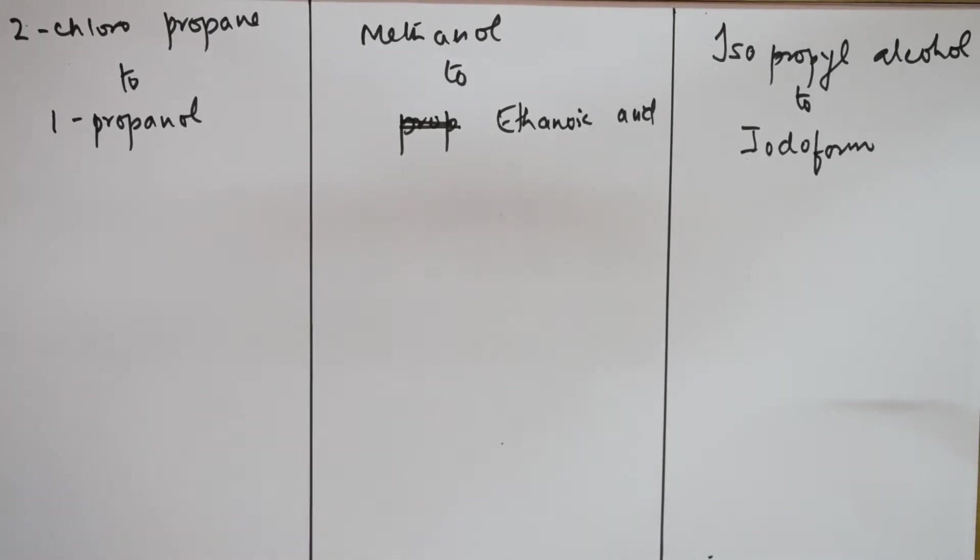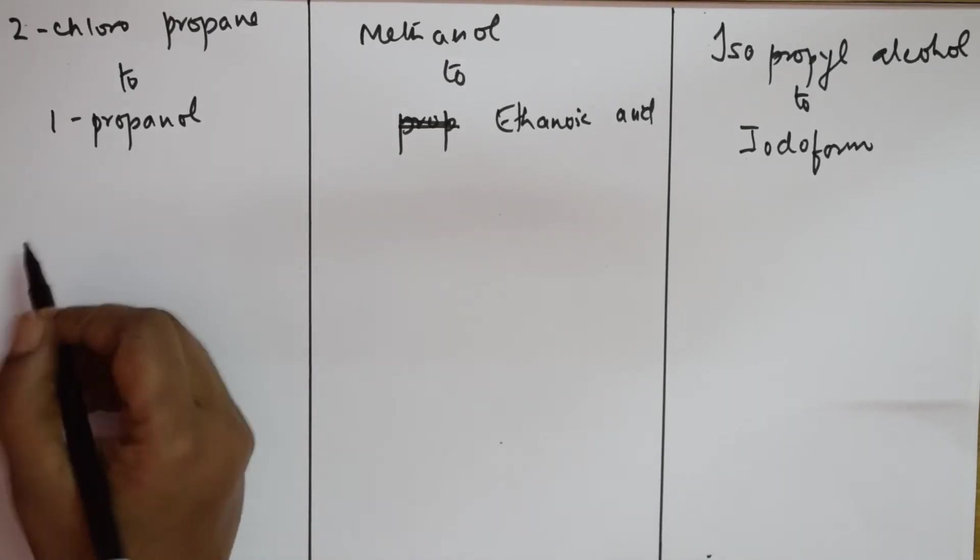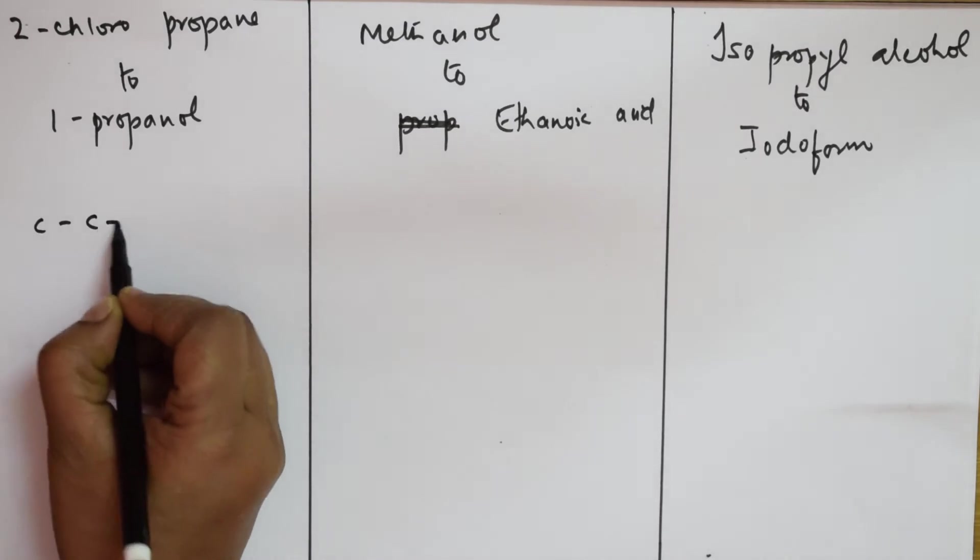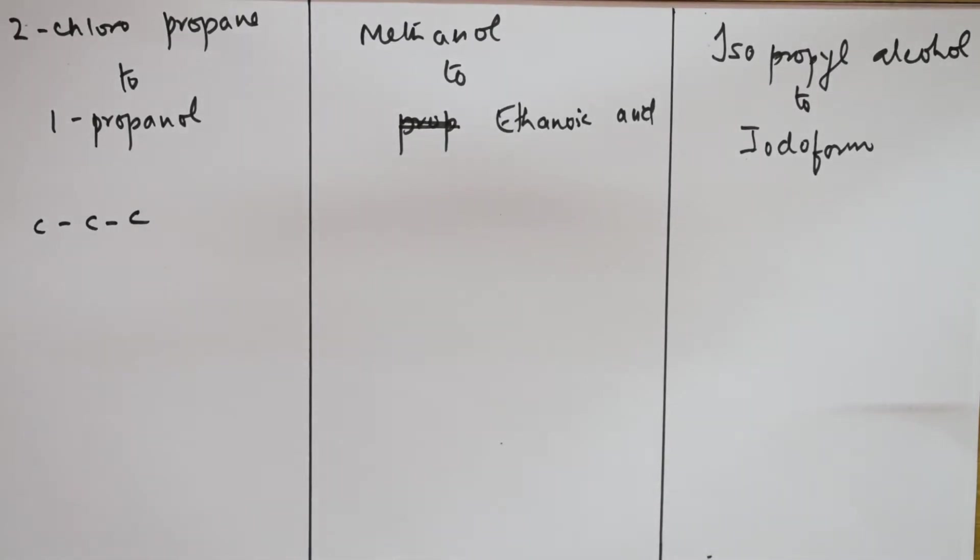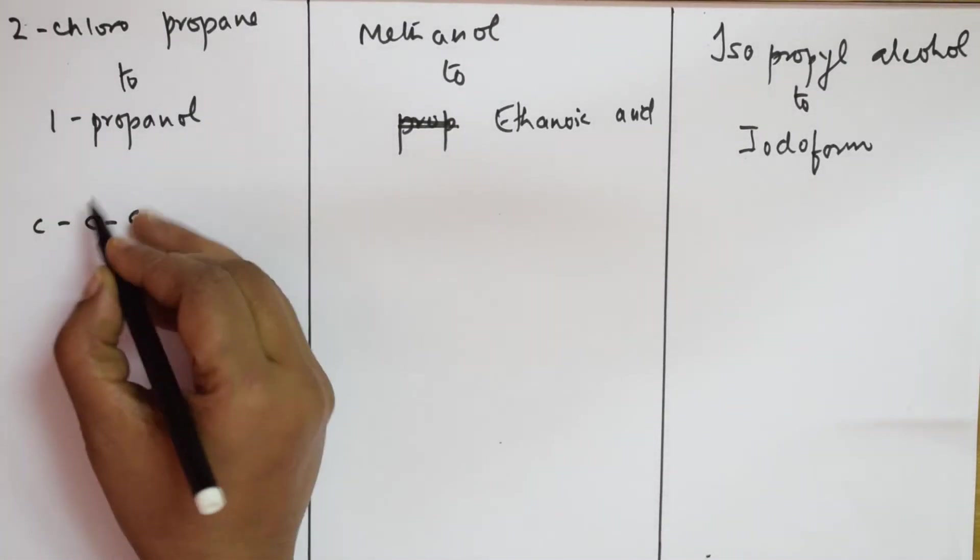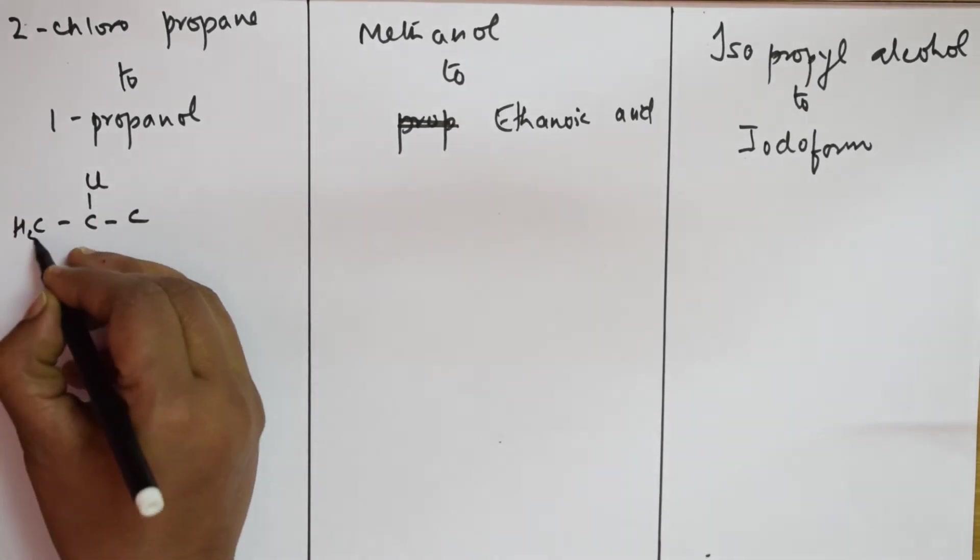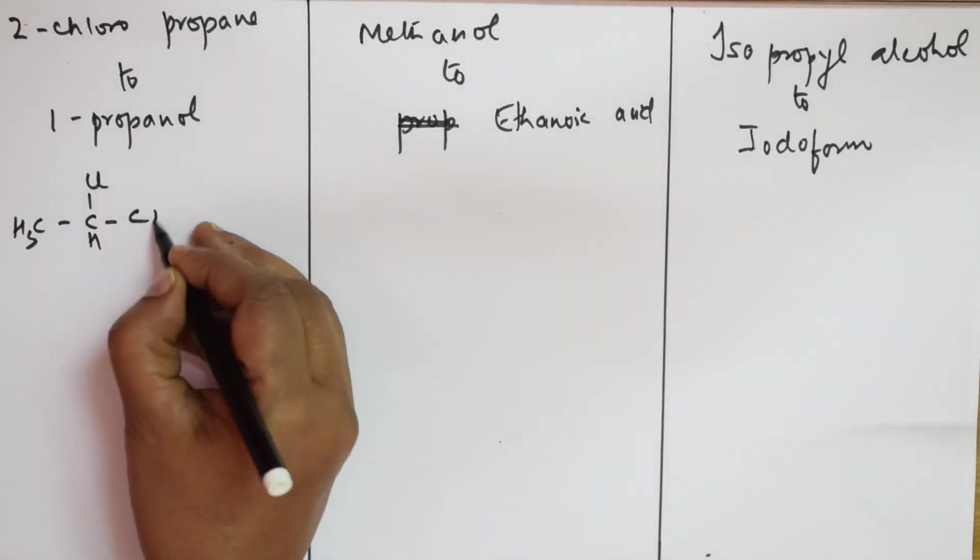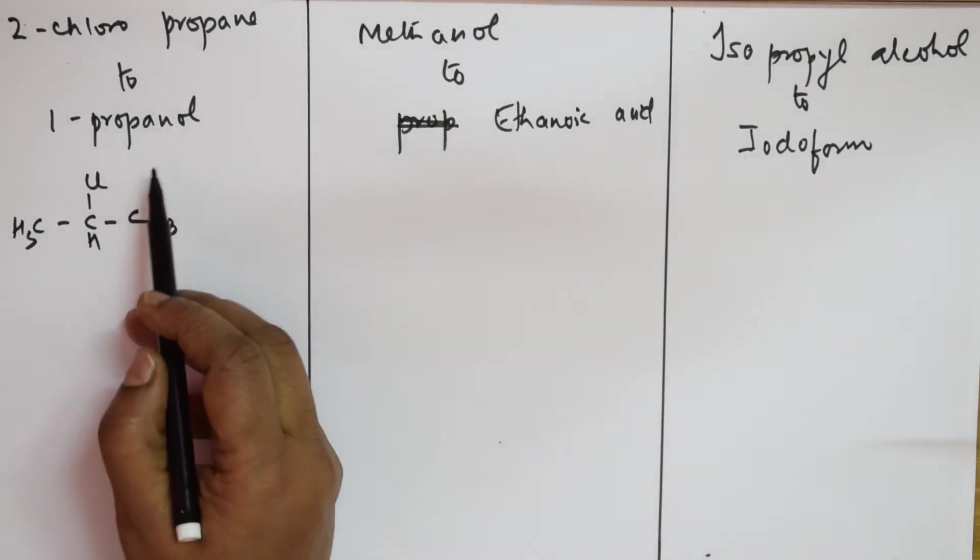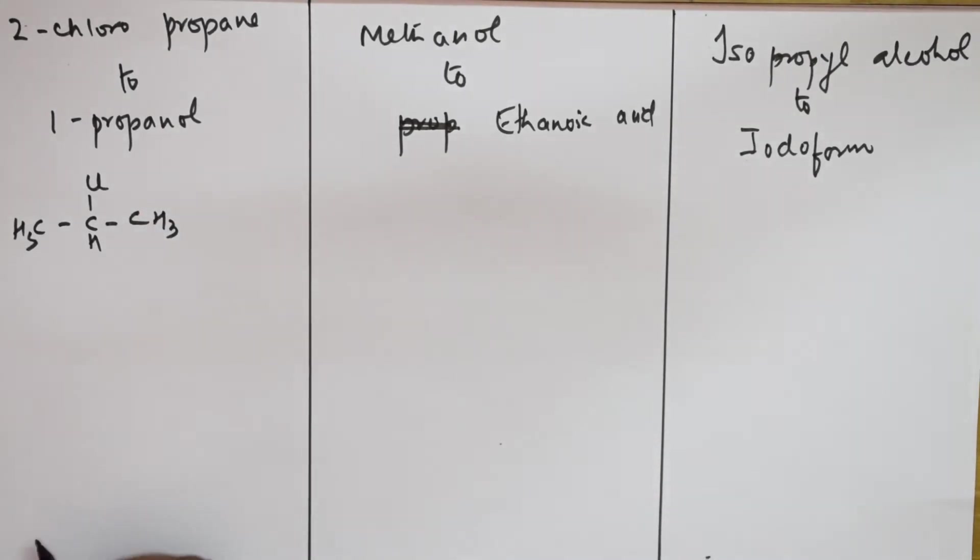Let us write the formula first. They give me 2-chloropropane. Let us write one, two, three - this is your propane. In the second position you have 2-chloro, so CH3-CHCl-CH3. Now I need to convert into 1-propanol. Take this one, two, three and this is 1-propanol: CH3-CH2-CH2OH.